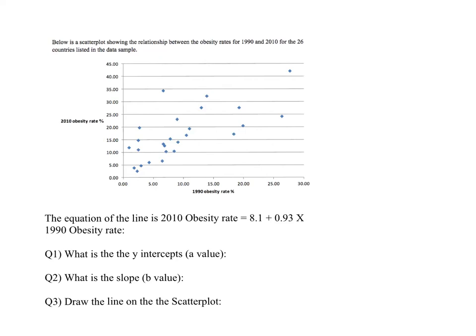Below is a scatterplot showing the relationship between obesity rates for 1990 and 2010 for 26 countries listed in a data sample. We're going to do a little bit of this in our next topic. This is actually a scatterplot, and what they're going to do is create an equation to represent the relationship that's going on between these two things.